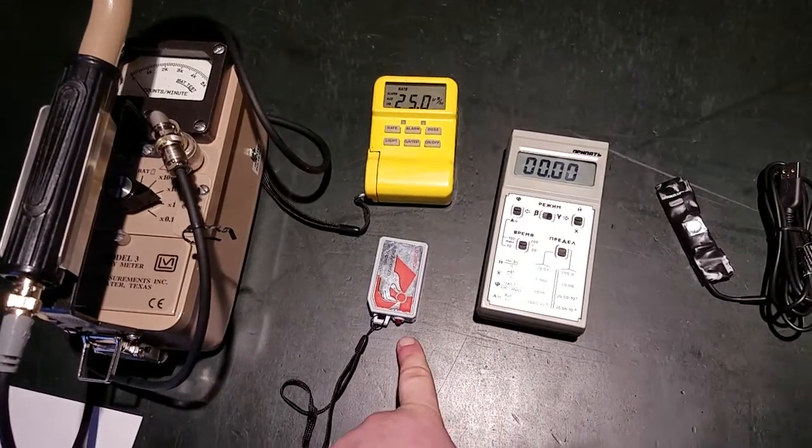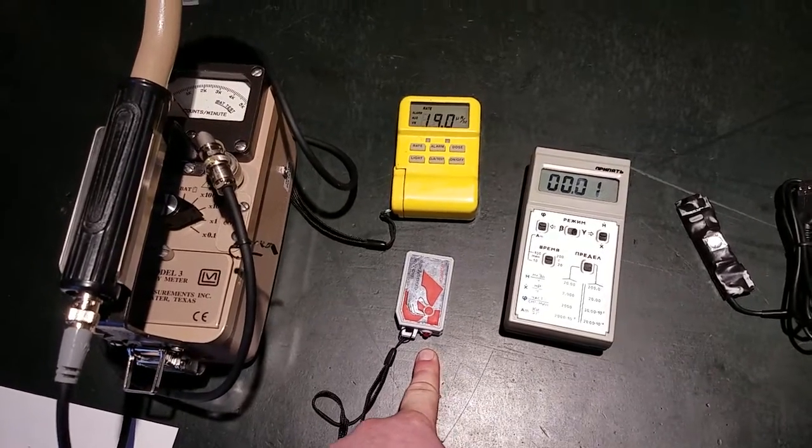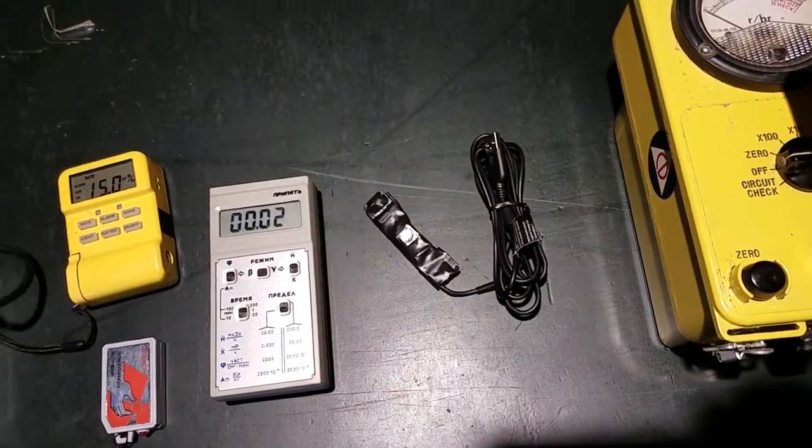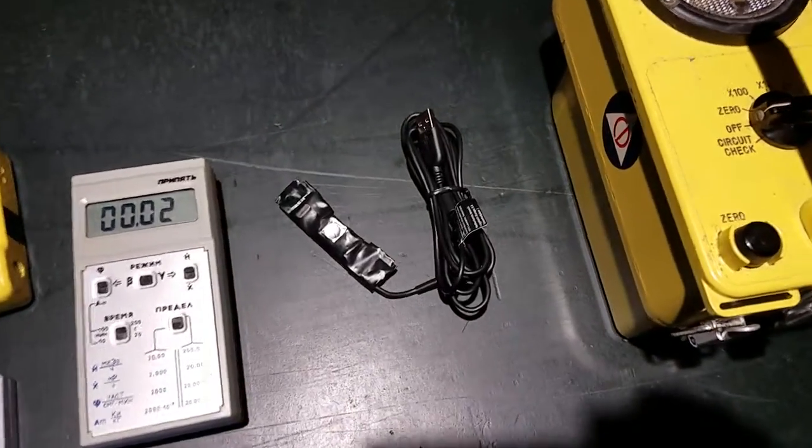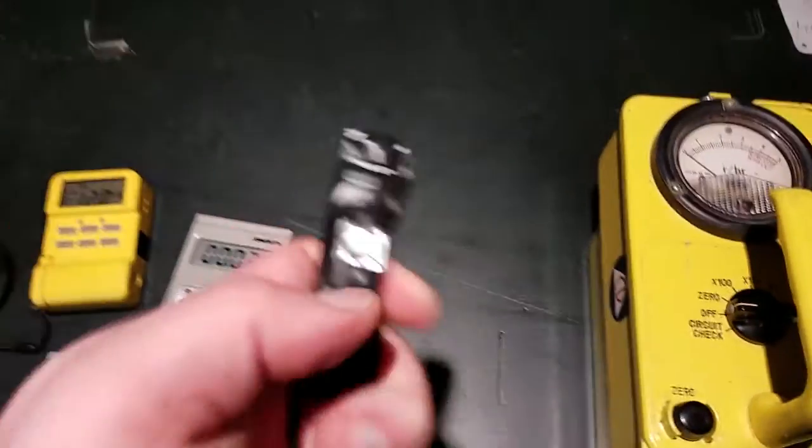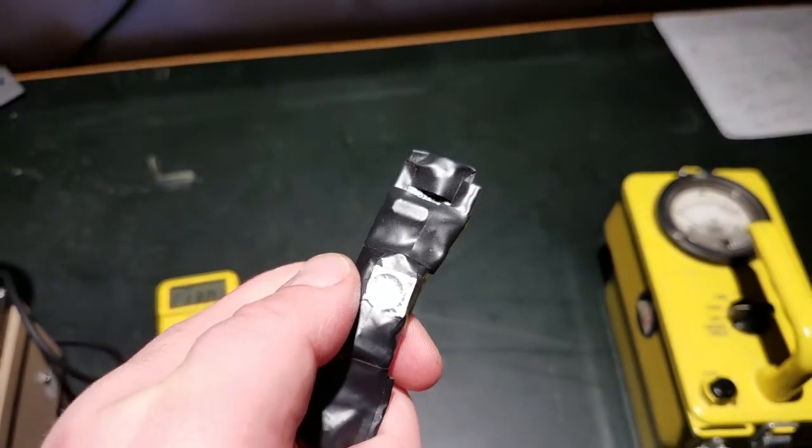And this one's the least sensitive of them all. This one only usually gets about two counts per minute background, so there's some chance you'll never hear it. This one requires special software to show you how it works, but basically I've covered the part where the lens would normally go with aluminum foil.